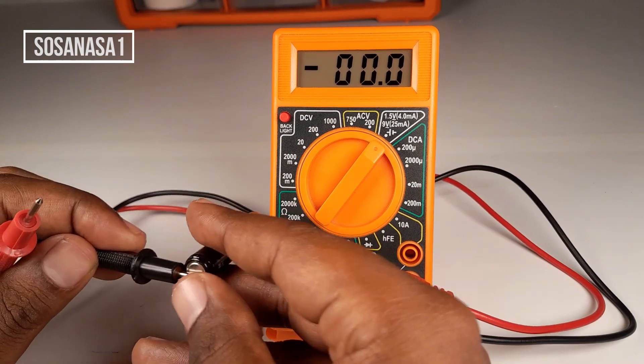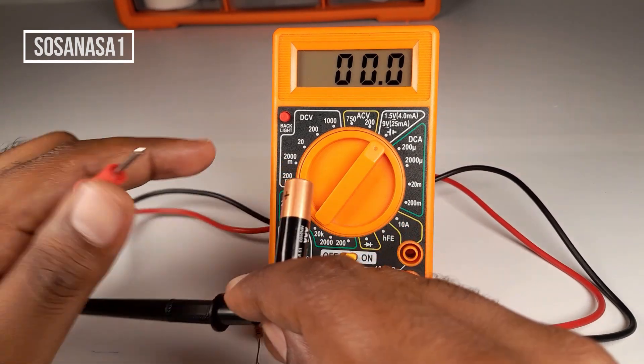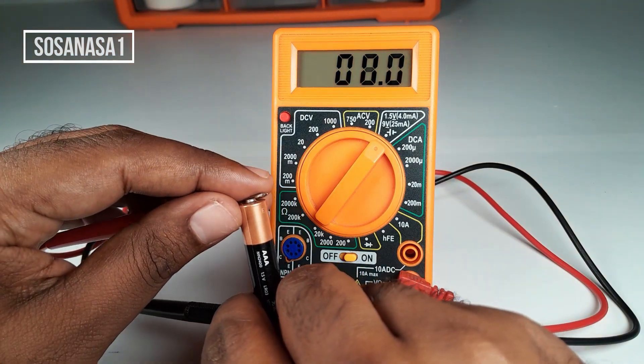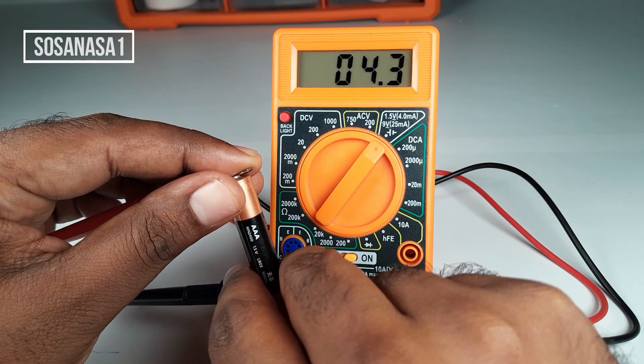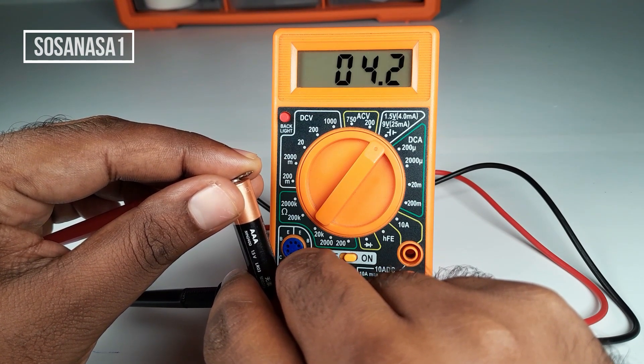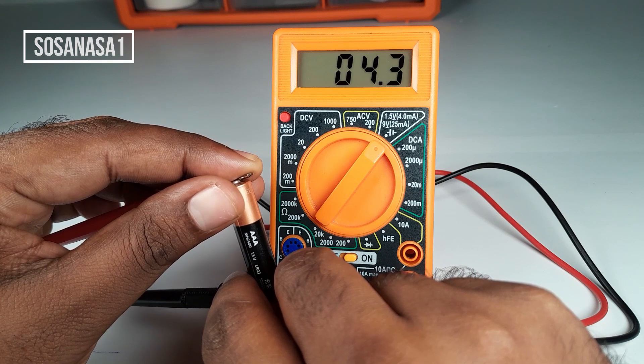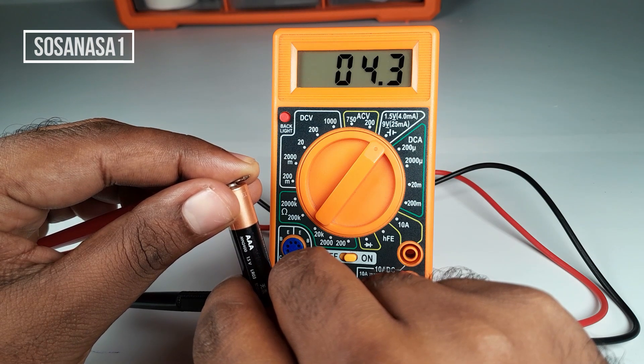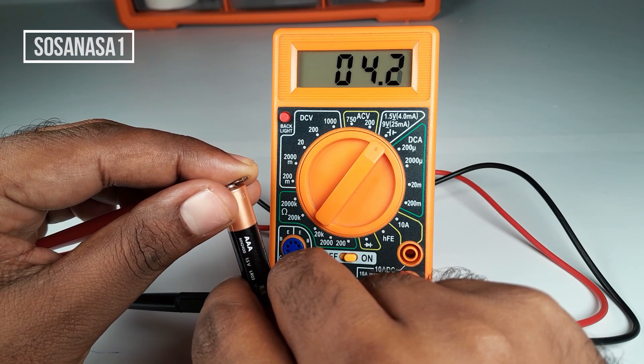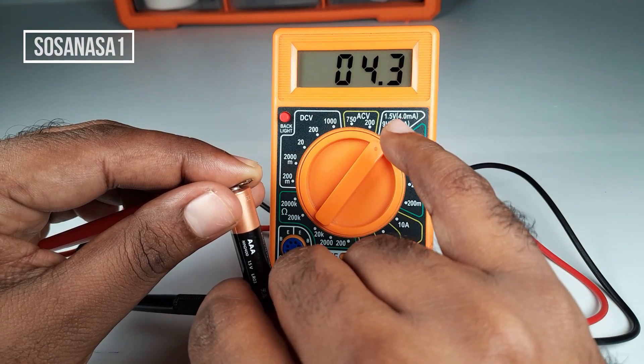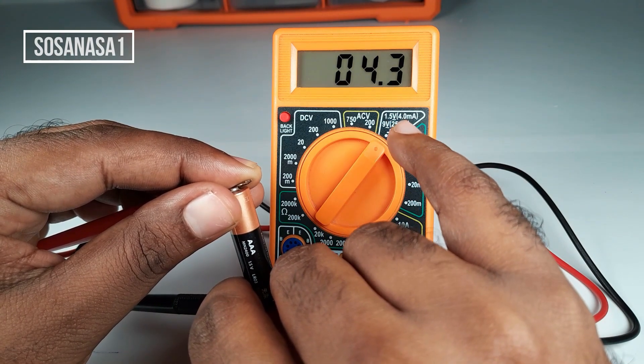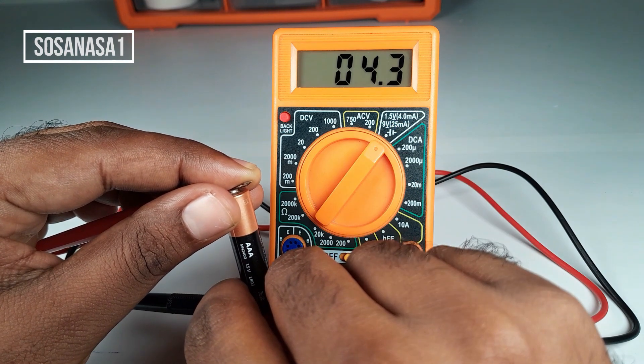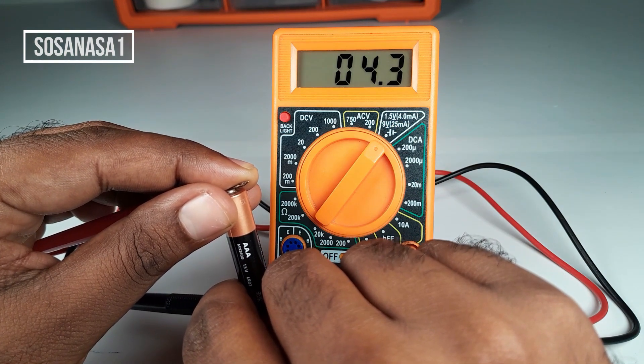The black is the negative and the red is the positive. Watch the multimeter screen. It shows 4.2 milliampere, which means this battery is full of charge and has enough energy. How do I know? Very easy. If you look here at 1.5 volts, 4 milliampere is the full battery indicator. In this case, this battery has 4.3 milliampere.